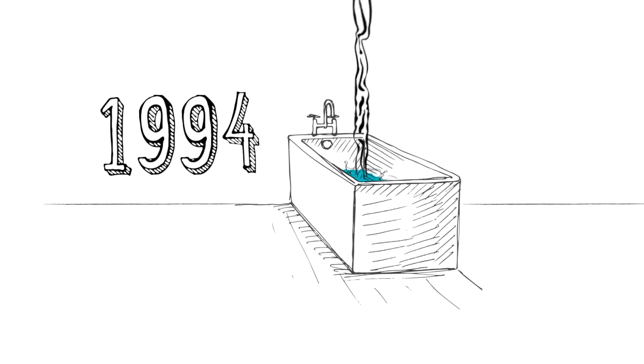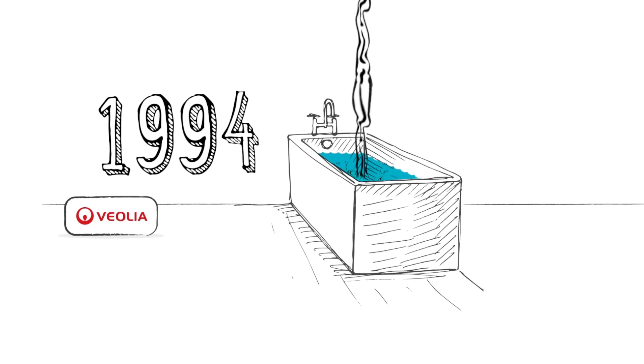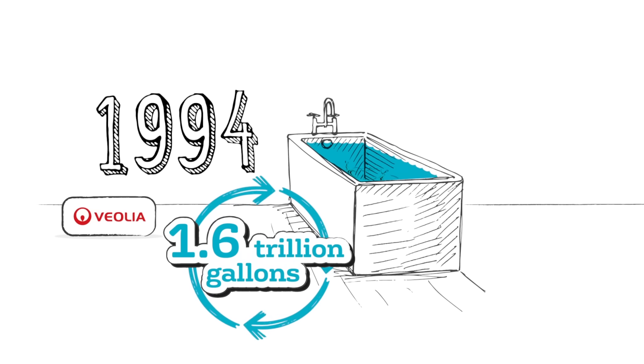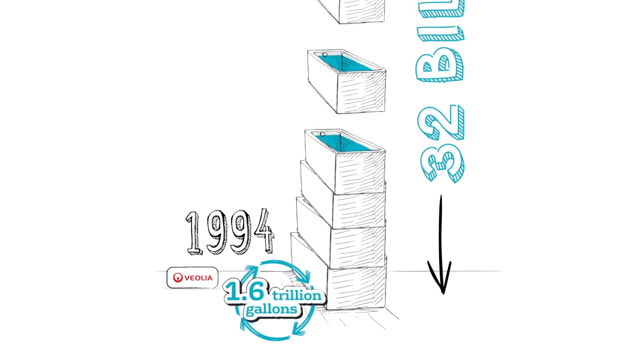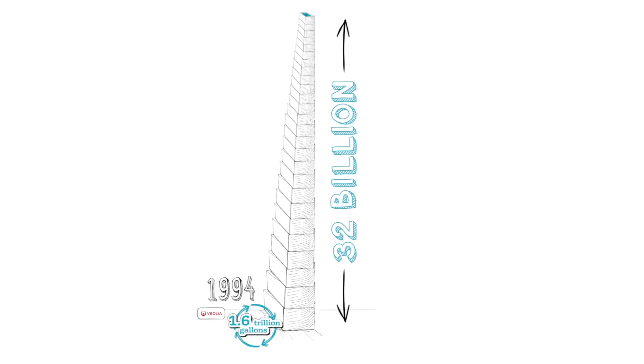Since 1994, the district—with the help of Veolia beginning in 2008—has captured and cleaned more than 1.6 trillion gallons of water and wastewater. That's the equivalent of filling 32 billion bathtubs. Here's how we do it.